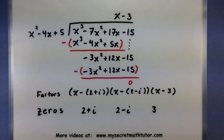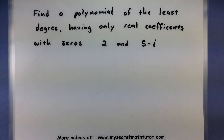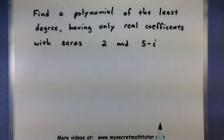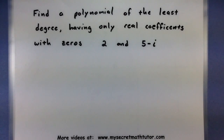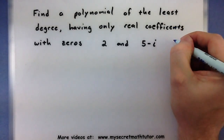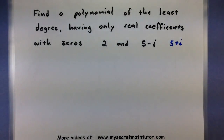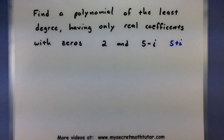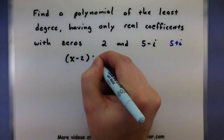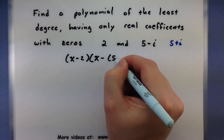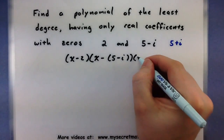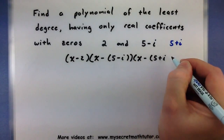Now let's use the complex zeros theorem in one more example. We want to find a polynomial of the smallest degree having only real coefficients with zeros of 2 and 5 minus i. Since we're building a polynomial with real coefficients and one zero is complex (5 minus i), the theorem tells us it must also have a zero at the conjugate, 5 plus i. So the factors are (x minus 2), (x minus (5 minus i)), and (x minus (5 plus i)).